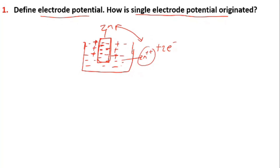Oppositely charged species create a potential difference. Then we have a single electrode potential. This single electrode potential is generated in between the metal and its ion interface. We have an electrode potential.